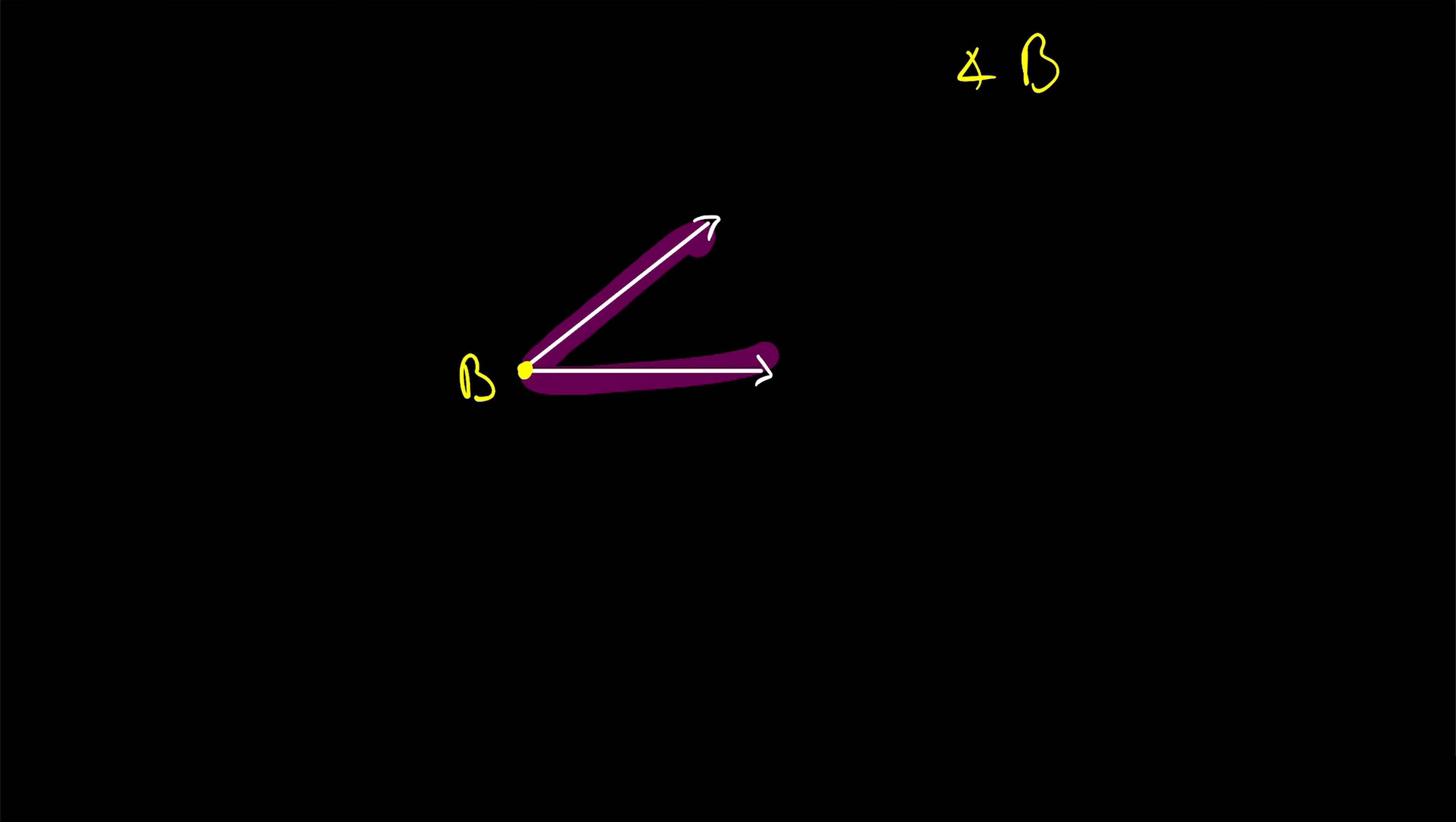So if the measure of this angle happened to be, let's say, 35 degrees, then we could write that the measure M of angle B is equal to 35 degrees.